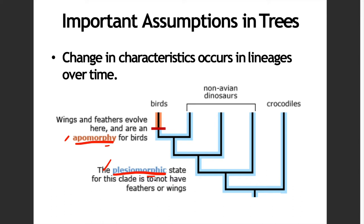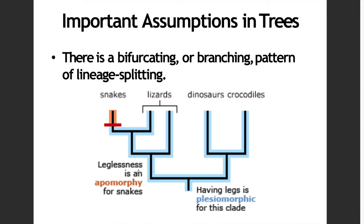We have two types of apomorphic: synapomorphic and autapomorphic. Synapomorphic is a shared derived condition. Autapomorphic is a unique character for that lineage. While for plesiomorphic, there is only one — we call them symplesiomorphic, a shared ancestral condition. So there are changes that occur in the lineage over time.